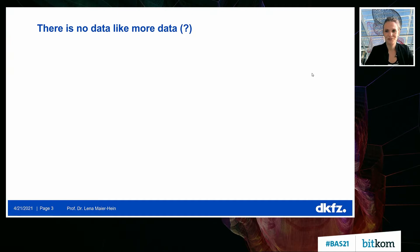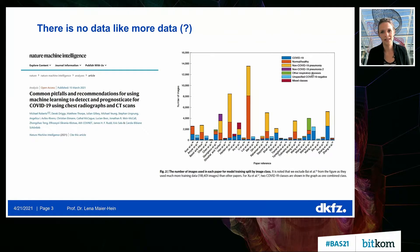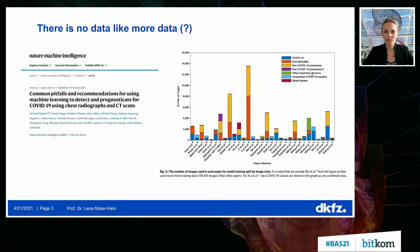My professor, Professor Weibel at university, always used to say there's no data like more data. And we all know that we need a lot of data in machine learning. But data in medicine is sparse, and you can see this particularly well if you look at COVID-related research — researchers started basically taking all the data they could possibly get, in this case for diagnosing COVID on the basis of imaging data.